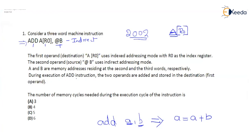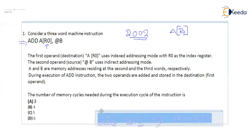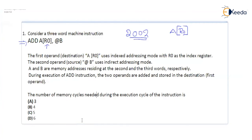During the execution of the ADD instruction, the two operands are added and stored in the destination — the first operand. The question is: what is the number of memory cycles needed during the execution cycle of this instruction? That is, how many times are we going to access memory when we execute this instruction? Let us have a look at how many memory cycles are actually needed.